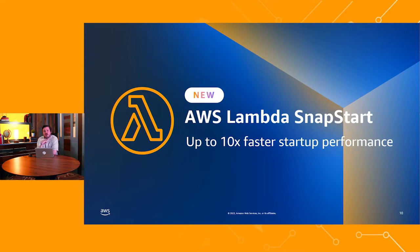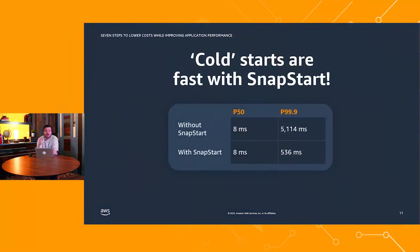A lot of you might have explored Lambda in the past and decided the performance just isn't where you need it for some of the slower startup times — the long tail of functions. Now it's time to reevaluate, because at the end of 2022 at re:Invent we launched AWS Lambda Snapstart, which provides up to 10x faster startup performance, particularly for those long-tail processes. Your P50 average workload would normally start within 8 milliseconds with or without Snapstart, but the long tail goes from over 5,000 milliseconds down to just over 500. If you've ruled out serverless for performance concerns, now's the time to reevaluate.